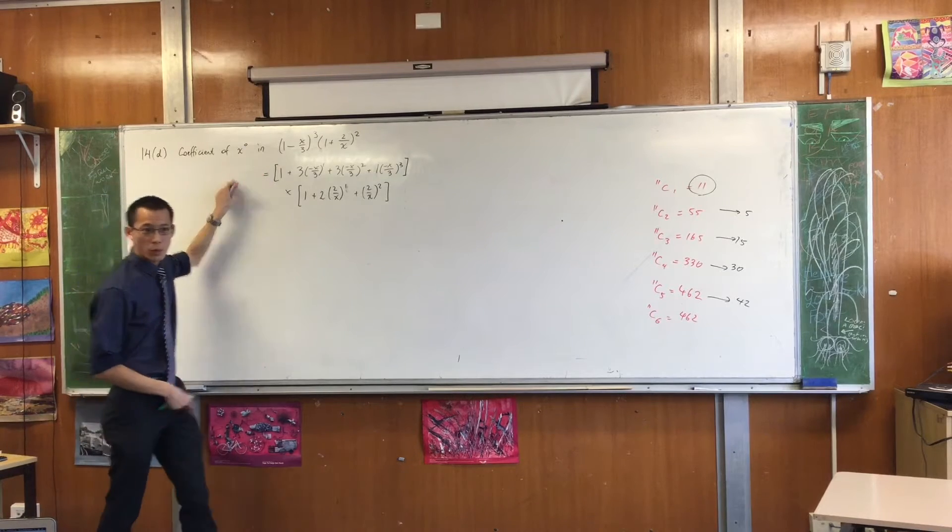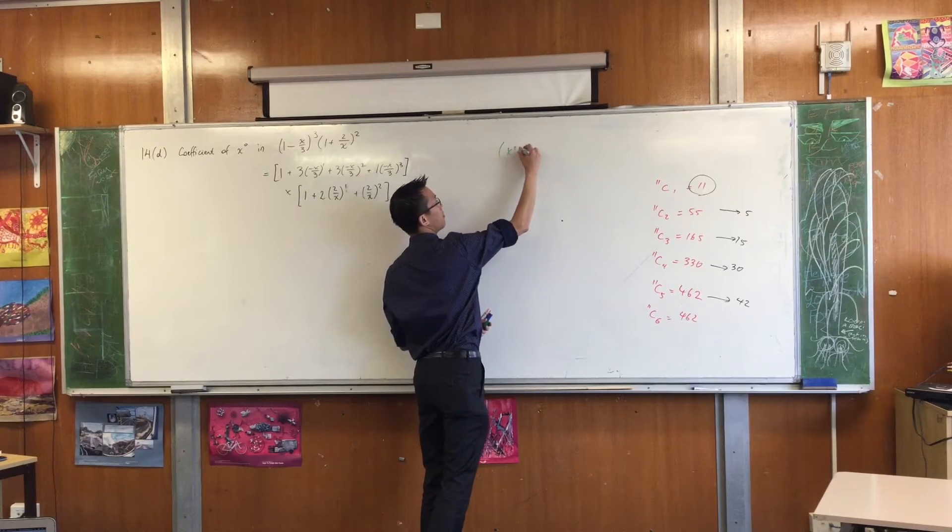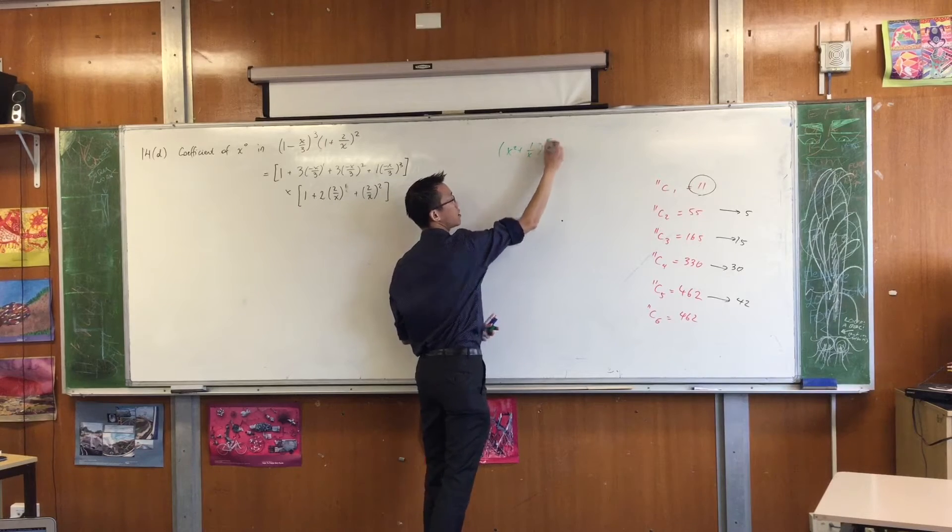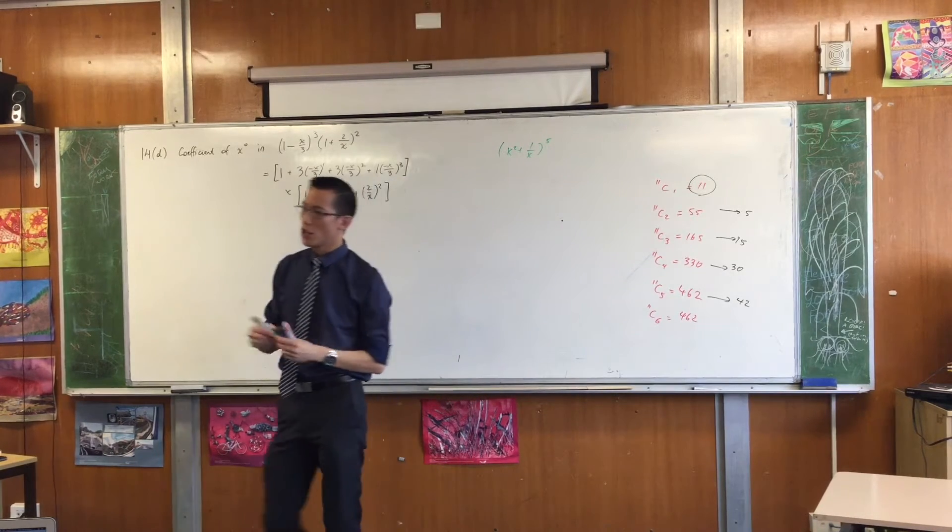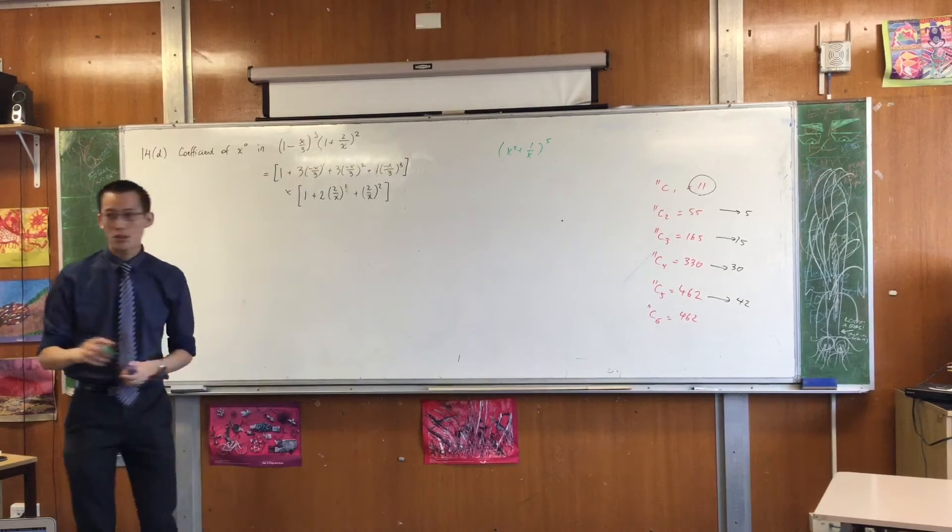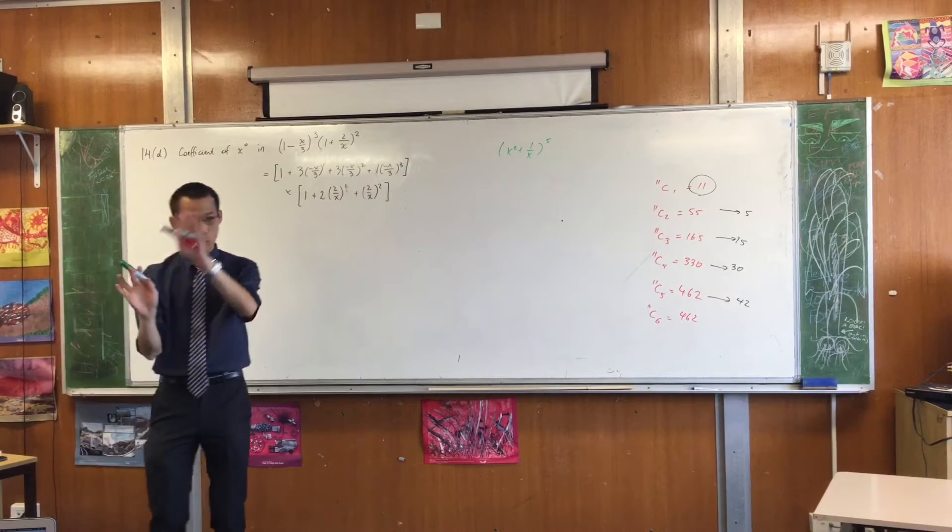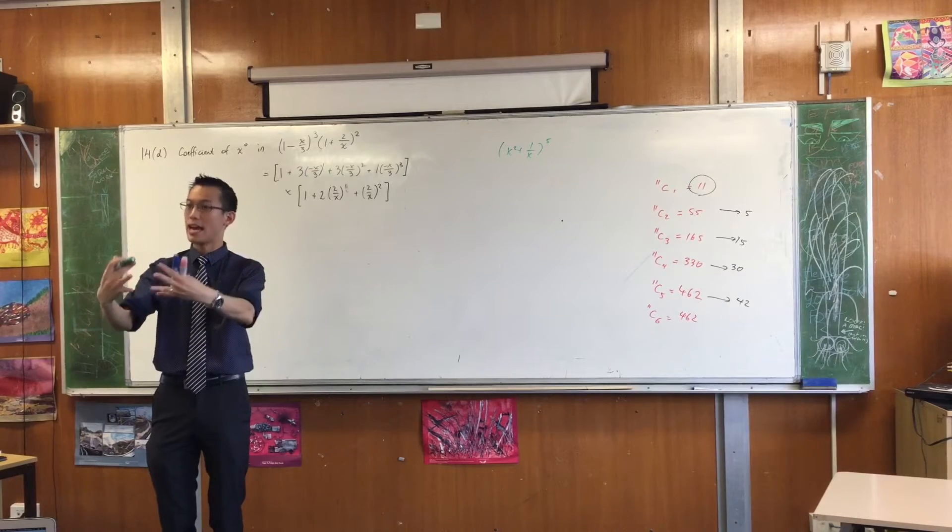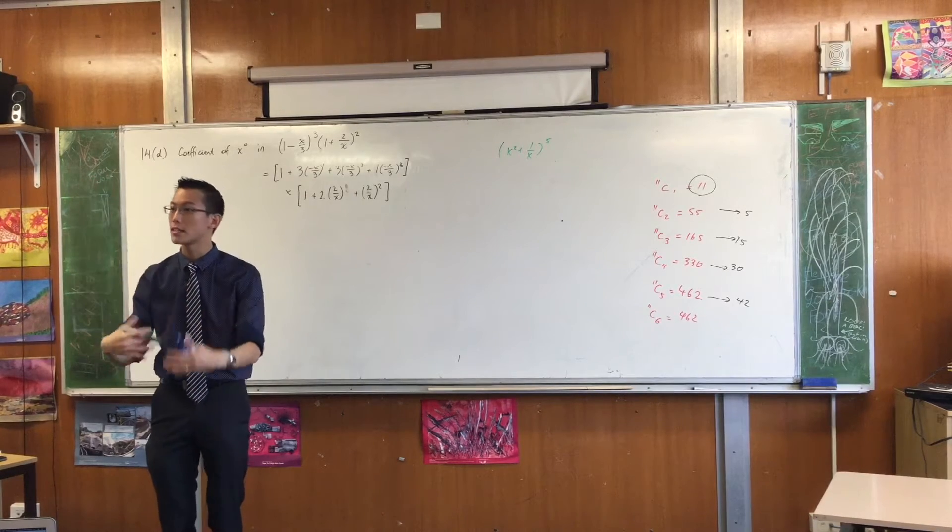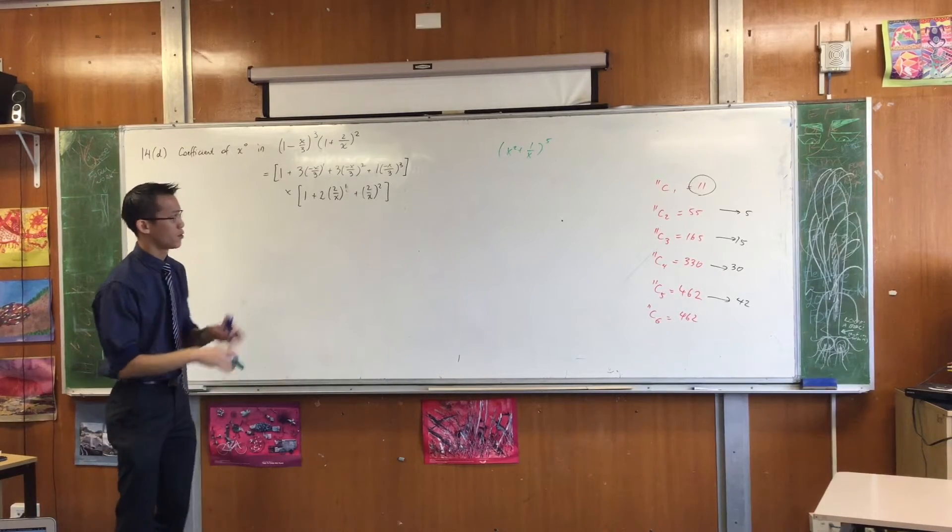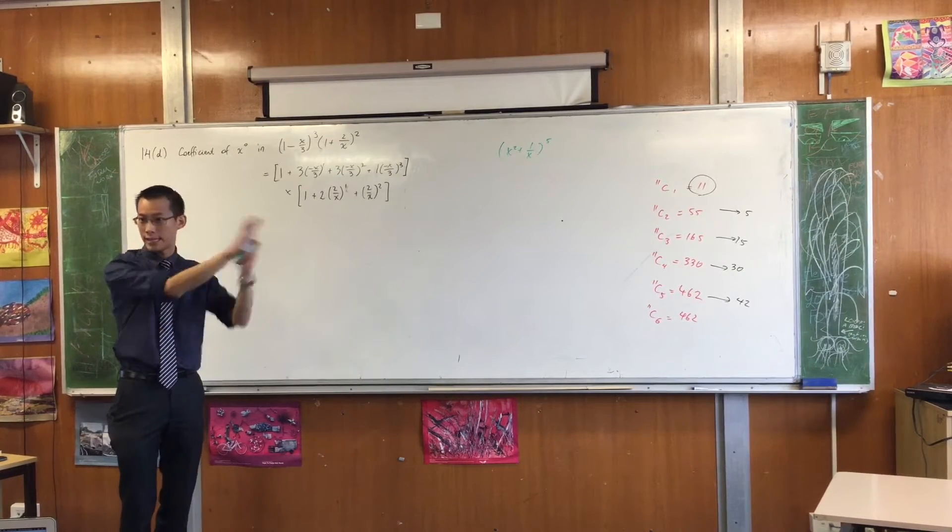Do you remember the example we looked at this morning with x squared plus 1 over x to the 5, right? Do you notice, when we did that, you had the x squared terms, you had the 1 over x terms, and then when you sort of collided them together, well, x's and x's, they start to cancel. And you've got powers that came out nicely, like x to the 10, x to the 7, 4, etc.